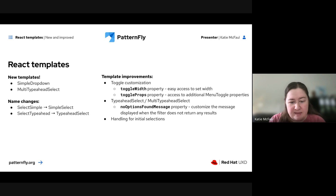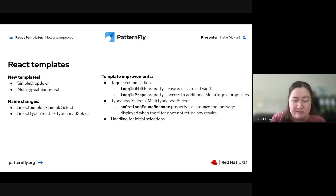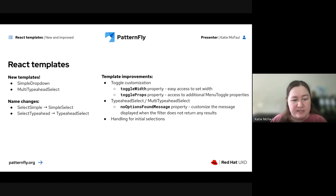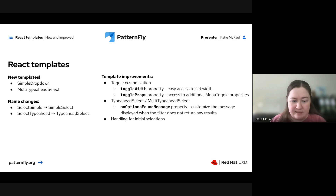For the type-ahead select and new multi-type-ahead select templates, there's a new no-options-found message property that lets you customize the message displayed when the filter returns no results. There's also handling for initial selections not made through component interaction — you can set default selections and have everything update properly. Additionally, props interfaces for all templates have been extended to their respective select or dropdown, so you can access additional props from the select or dropdown components and they'll be spread and passed properly to internal components.